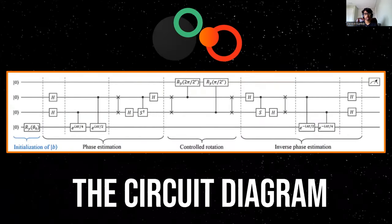Here you can see the circuit diagram of the HHL algorithm. We start with the initialization of B, phase estimation, controlled rotation, inverse phase estimation, measurement, and then post-processing.